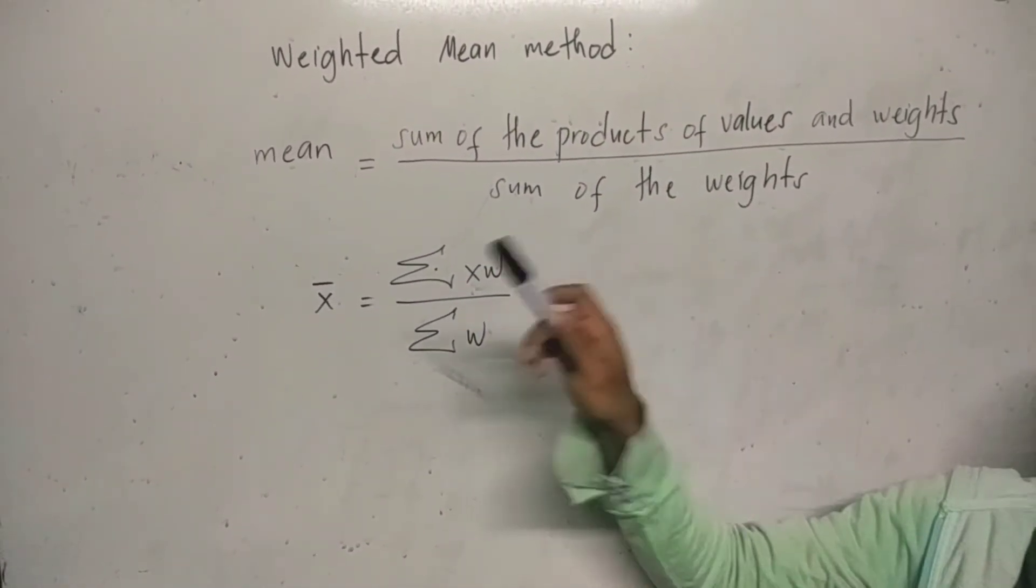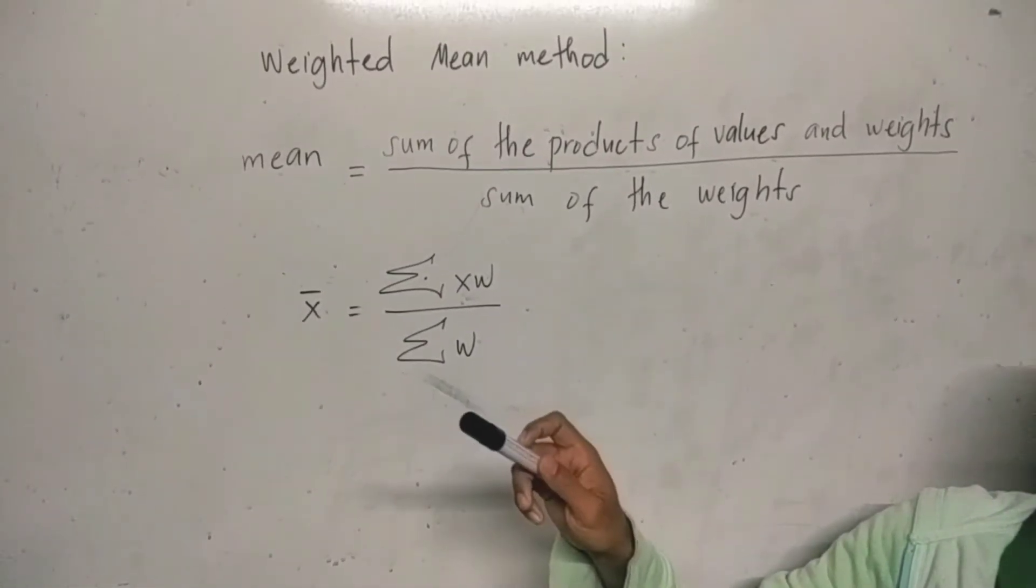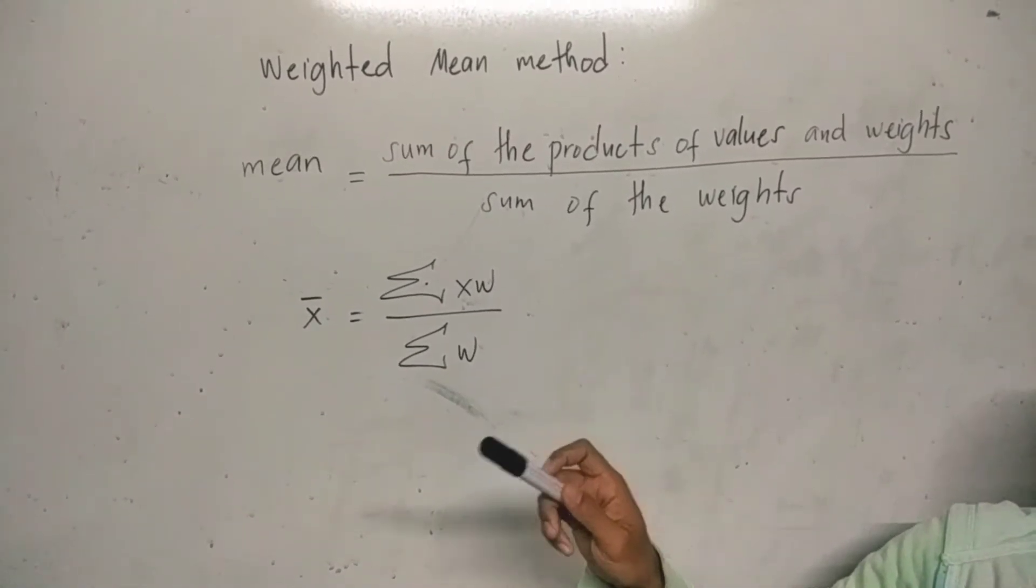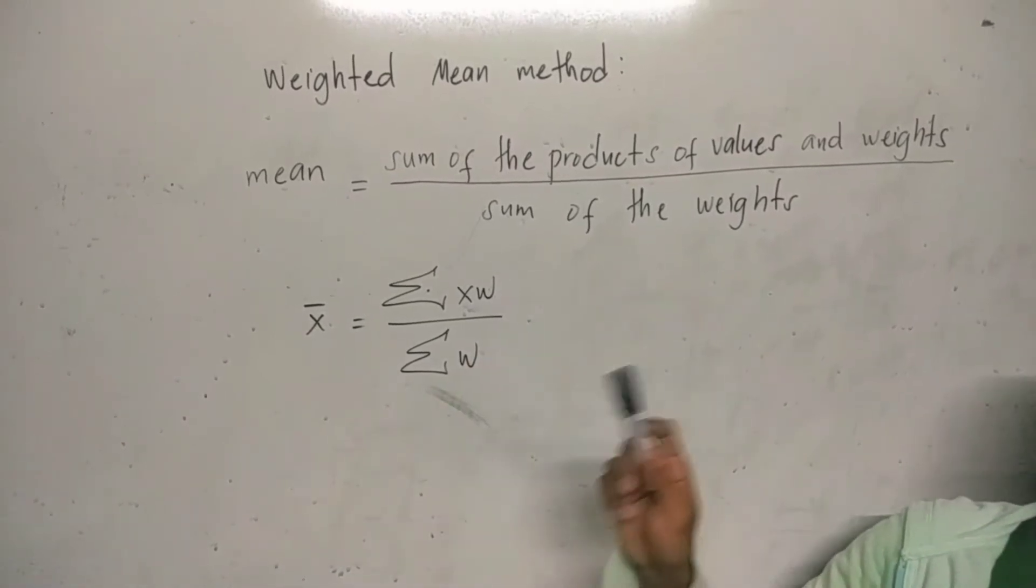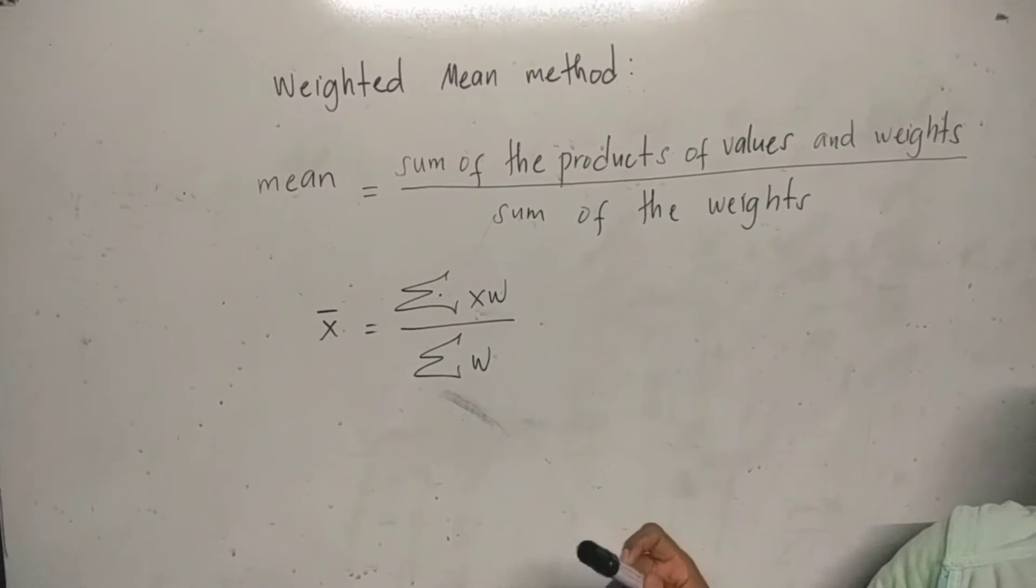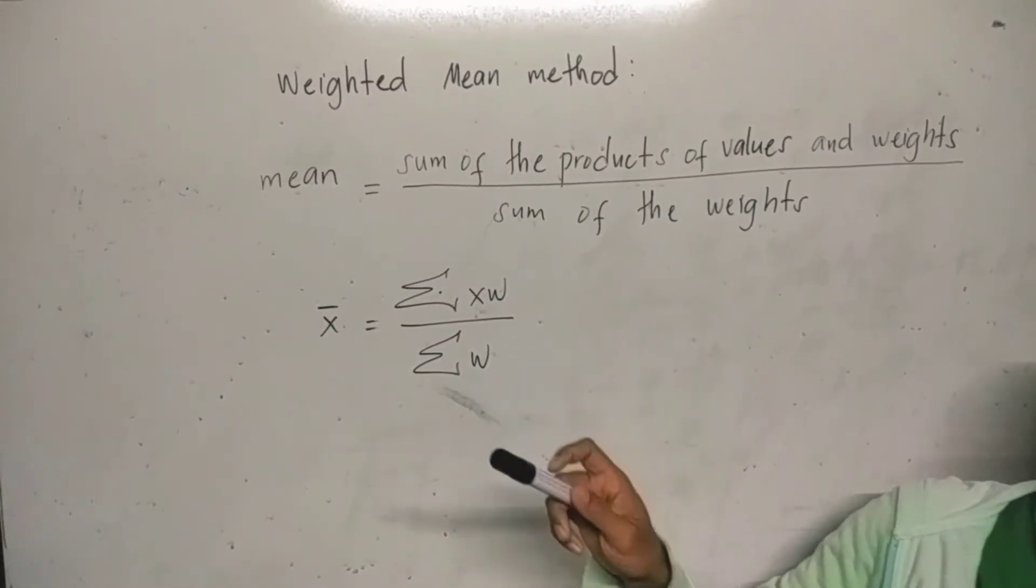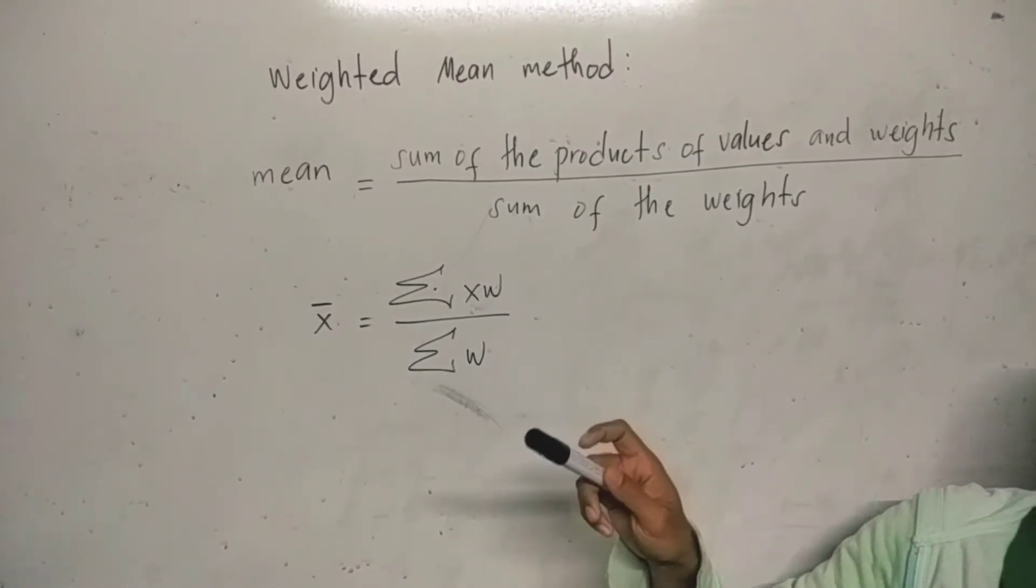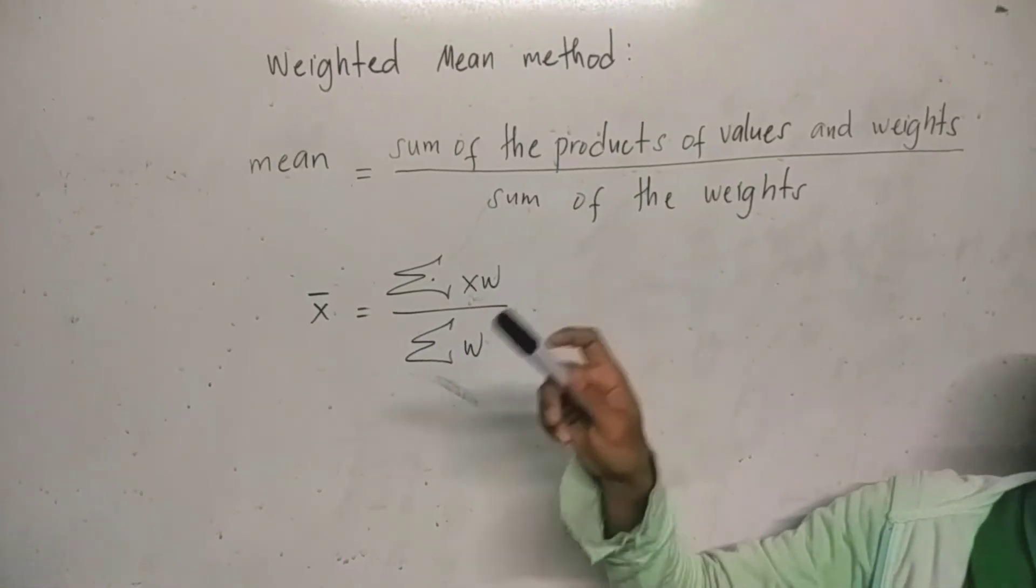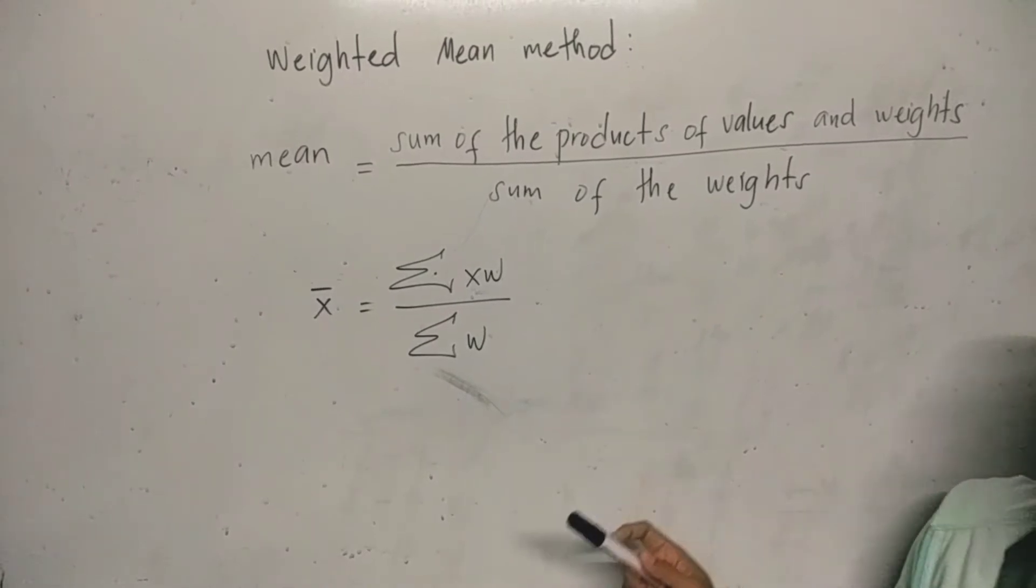Weighted mean is a type of mean that is calculated by multiplying the weight or probability associated with a particular event or outcome with each associated quantitative outcome, and then summing all the products together. It is very useful when calculating a theoretically expected outcome where each outcome has a different probability of occurring, which is the key feature that distinguishes the weighted mean from the arithmetic mean.